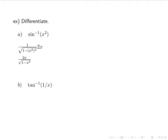Let's try another one: tan inverse of 1 over x. Again, I'm going to start with the derivative of tan inverse, which is 1 over 1 plus — in this case — 1 over x, squared. And then I'm going to multiply by the derivative of 1 over x, which is negative x to the negative 2. Remember that 1 over x is x to the negative 1, so I bring down the negative 1 and make it x to the negative 2, and x to the negative 2 is 1 over x squared.